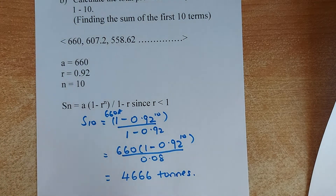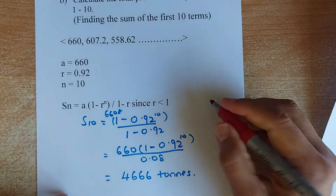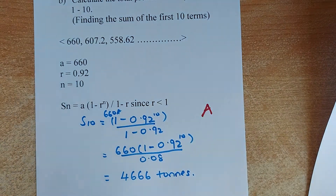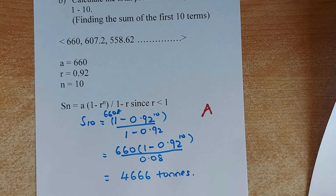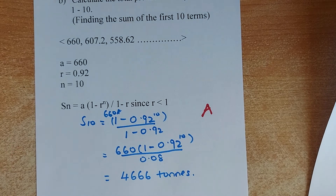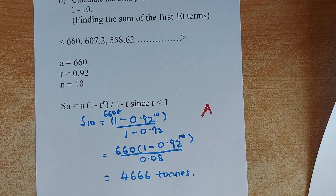That is all about geometric progression. If you can remember the formula for the AP — the sum and the Nth term — as well as the GP sum and term formulas, you should get an easy achieve in this paper. Hope you learned something. Keep practicing, learn how to use your calculator, and you should be all good for your internal. Cheers, everyone.